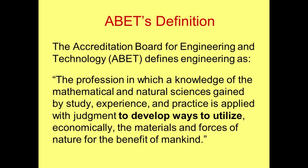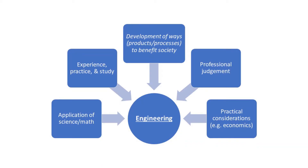The next key element is the development of ways to utilize natural things — this is where we really get to the essence of what distinguishes engineers from even other applied sciences. The ways we develop to utilize natural things tend to involve products and processes, and if I had to highlight one element that really gets to the essence of distinguishing engineering from other professions and fields, it would probably be that. We also have the critical consideration of practical factors we have to consider, like economics, as well as many other practical concerns, and of course the overarching purpose, which is societal benefit.